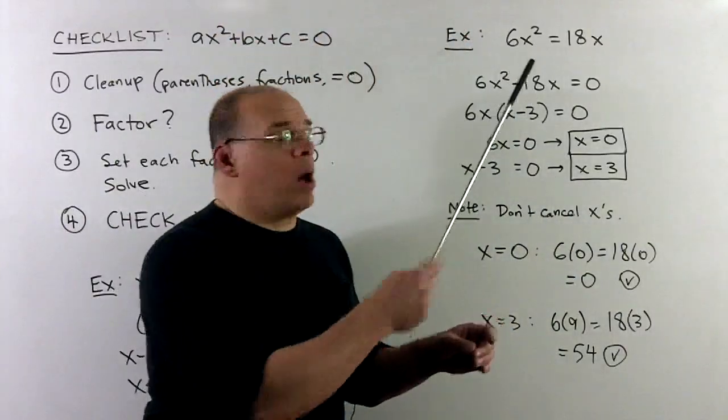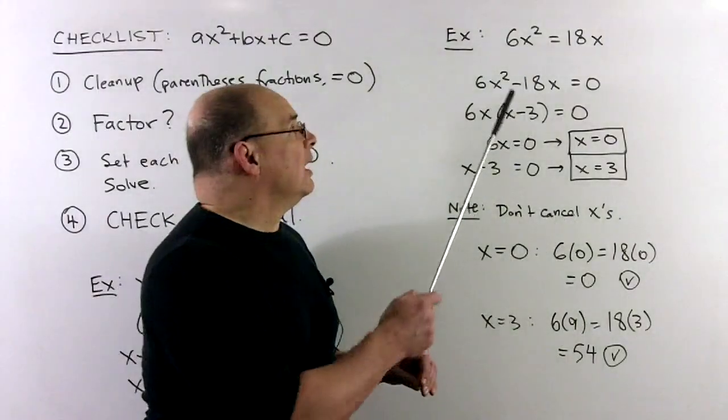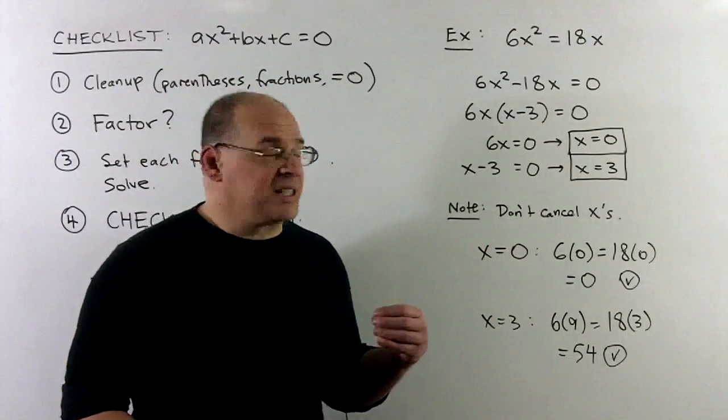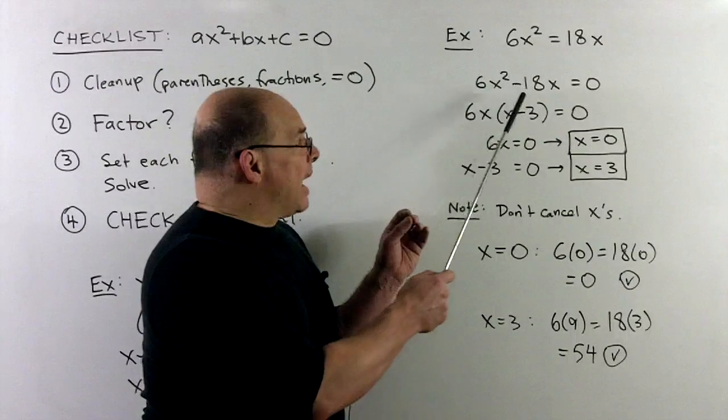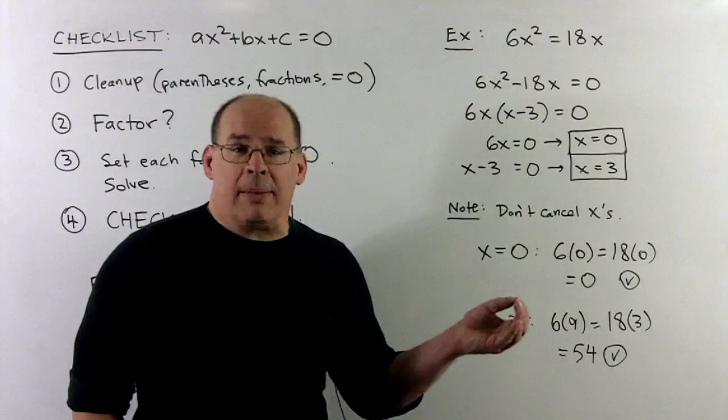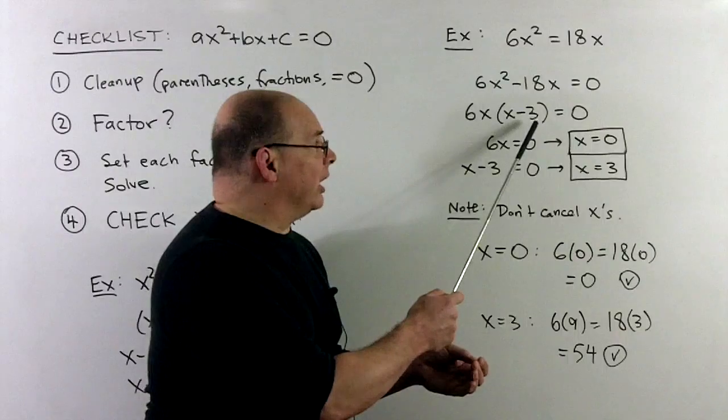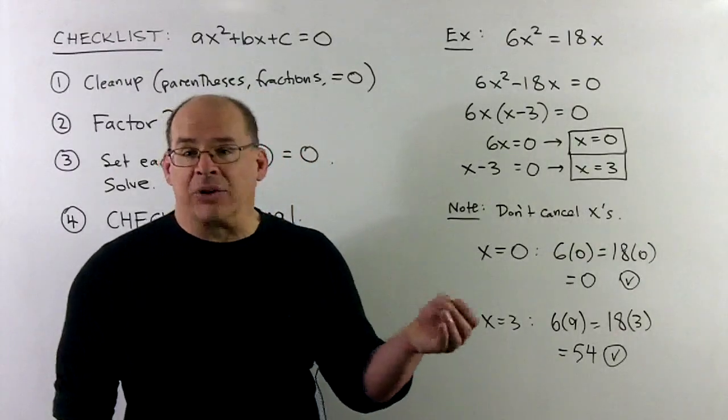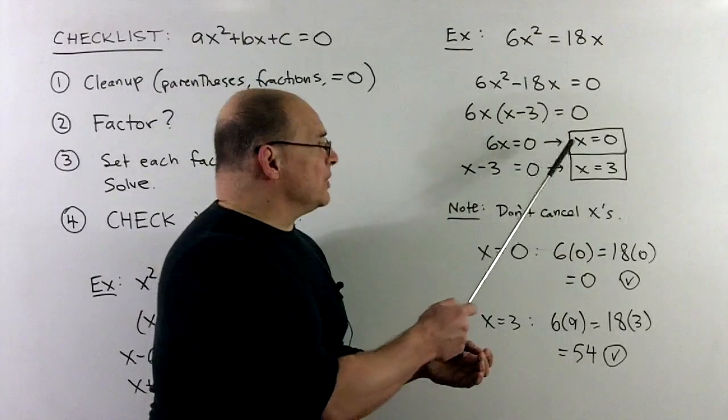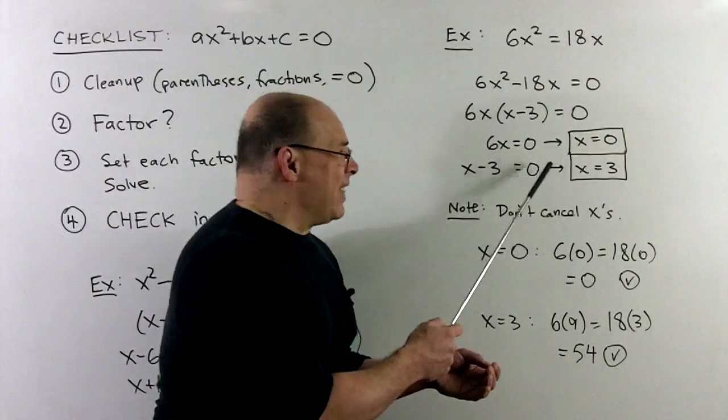Now, let's try one where we need to do cleanup. I have 6x squared equal to 18x. I move everything to one side. That gives me 6x squared minus 18x equals zero. Here, if I factor, we've got a greatest common factor of 6x. I pull that out. What's left over is x minus 3. I set each factor equal to zero. 6x equals zero goes to x equal to zero. The x minus 3 equal to zero goes to x equal to 3. And that's our answer.